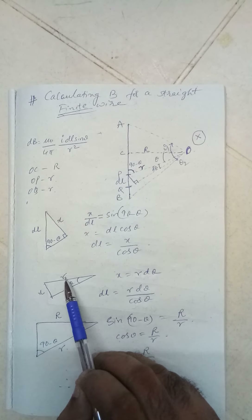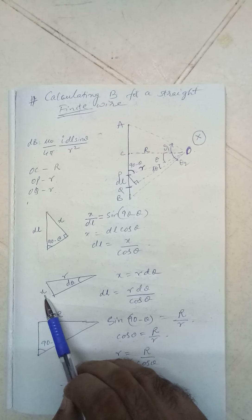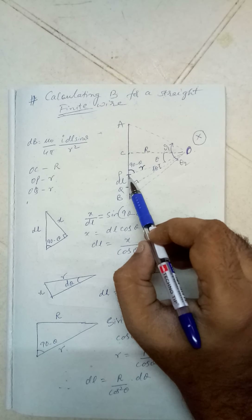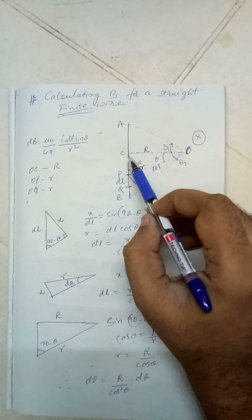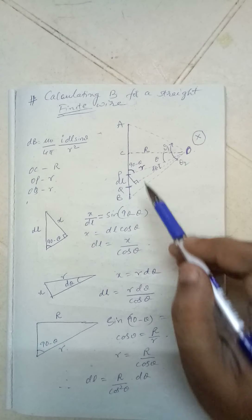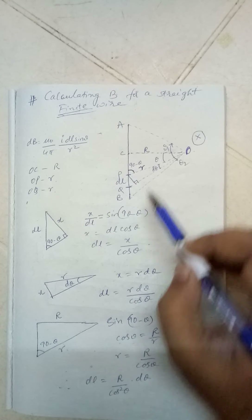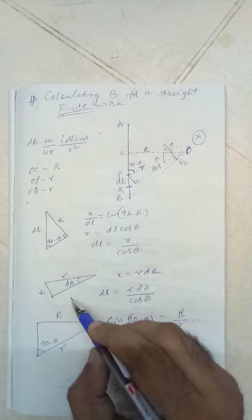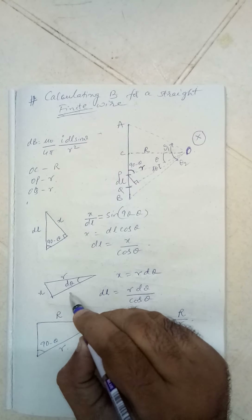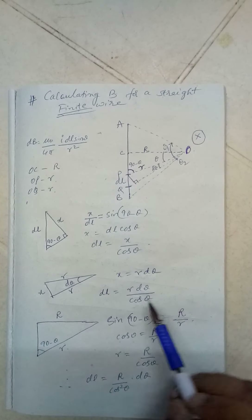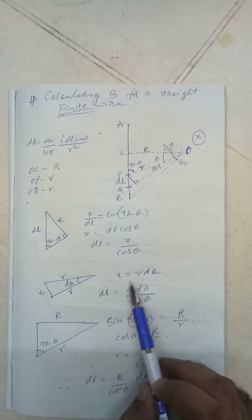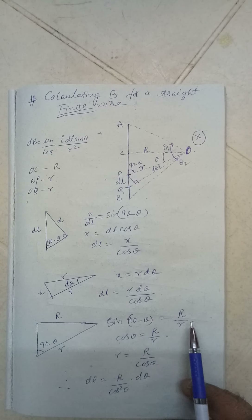In that triangle, one side is r and the small angle is theta. Point B makes theta with OC, and the point between P and Q makes a small angle d theta. Since OQ is almost equal to r, we can write x equals r d theta. Substituting: DL equals r d theta divided by cos theta.